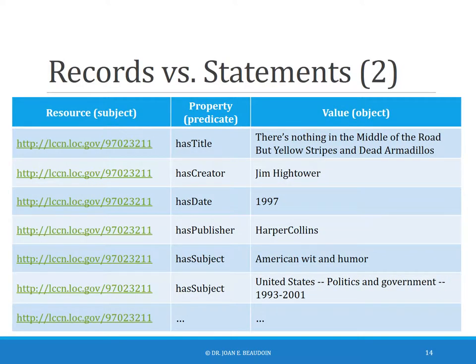When we have statements, each of those columns is transformed into a URI. In this first case, we have this resource — the particular item being described — which has a certain property, and that's the predicate. So this item contained within the Library of Congress's library system has this particular title, 'There's Nothing in the Middle of the Road but Yellow Stripes and Dead Armadillos.' This particular item has creator Jim Hightower, has the date 1997, and so on. We're starting to create our statement as opposed to looking at things in a typical record format, and now we're creating those RDF statements.